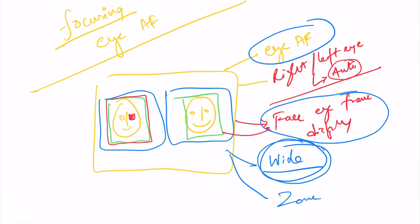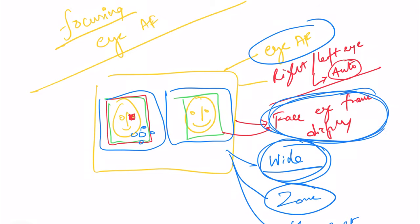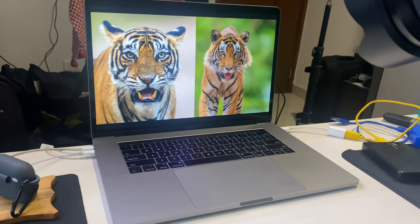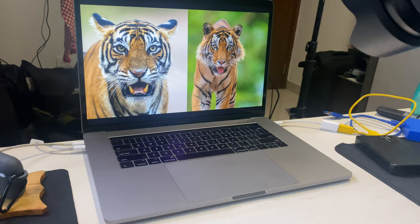Do not use wide to track subjects when there are two subjects — it's very difficult to tell the camera which one to focus. Zone is great. Even if your flexible spot is somewhere inside the face eye frame display, it'll pick up the face and the eyes. So I'd probably choose zone or flexible spot, not wide.